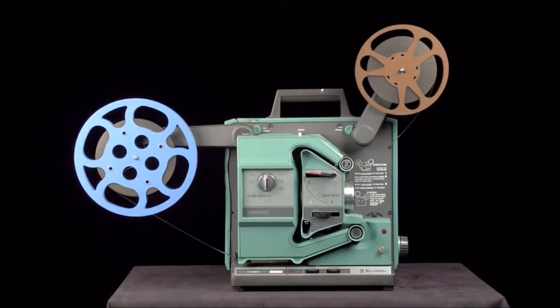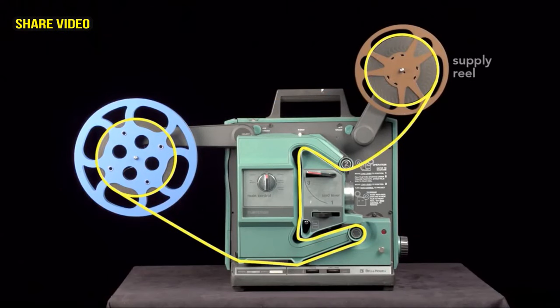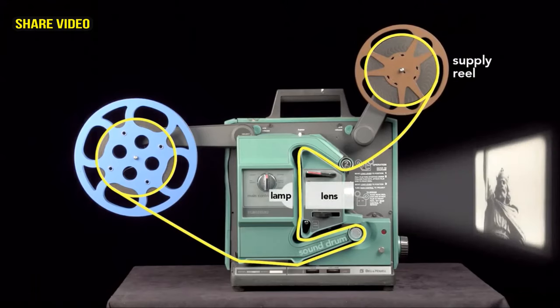To create the illusion of movement, a series of still images, the film, is pulled off the supply reel, threaded between the lamp and lens so the image can be projected, then run across the sound drum, and finally coiled onto the take-up reel. However, it isn't as simple as that sounds.